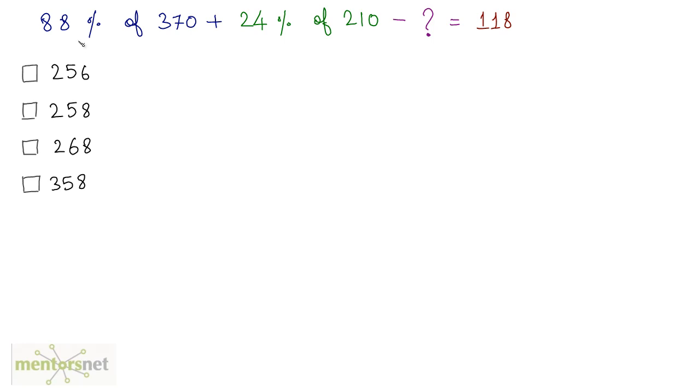Well, you have 88 percent of 370, which is equivalent to 88/100 times 370, plus 24 percent of 210, which is equivalent to 24/100 times 210, minus x equals 118. We can solve this: the zeros get cancelled out. Here also zeros get cancelled out.